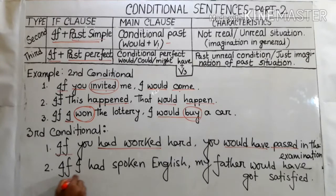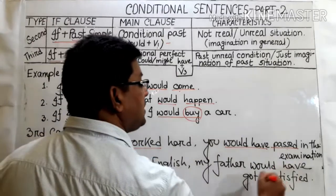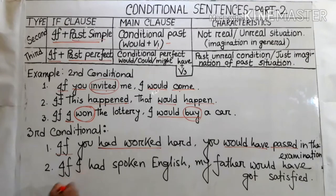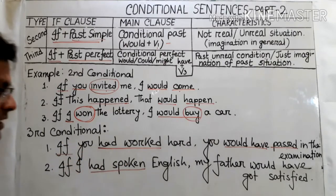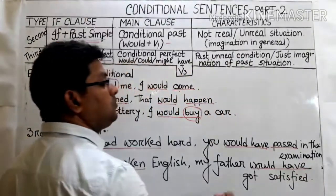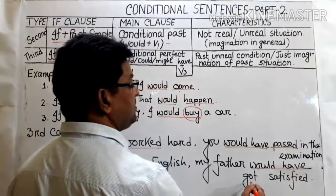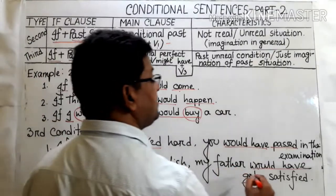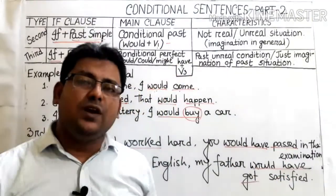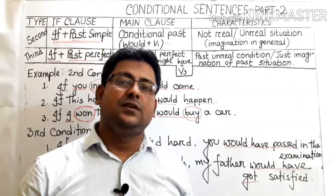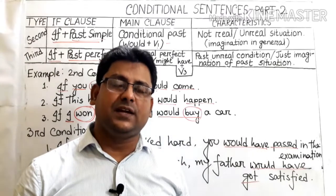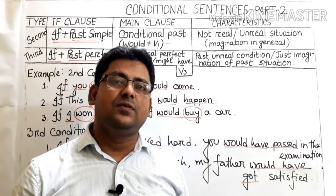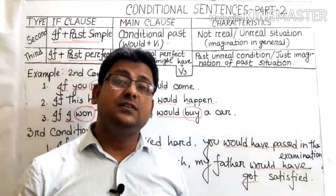In the second example: 'If I had spoken English, my father would have got satisfied.' Here, 'had' plus verb 3 has been used in the if-clause — that means past perfect tense. In the main clause, 'would have' has been used followed by verb 3. So this is the character of the third conditional: the if-clause contains 'if' plus past perfect, and the main clause contains 'would have,' 'could have,' or 'might have' plus verb 3.